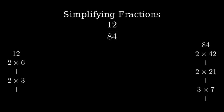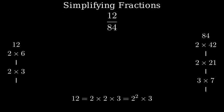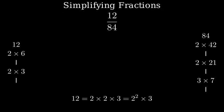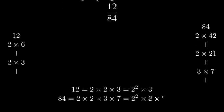Let's start by finding the factors of both numbers. For 12, we can break it down into 2 times 2 times 3, which is 2 squared times 3. For 84, we can break it down into 2 times 2 times 3 times 7, which is 2 squared times 3 times 7. Now that we have both numbers broken down into their prime factors...